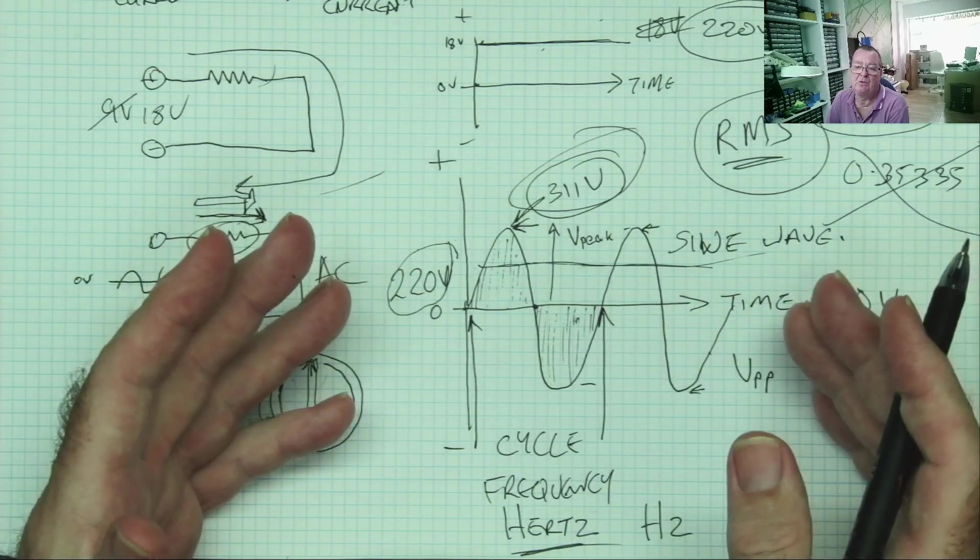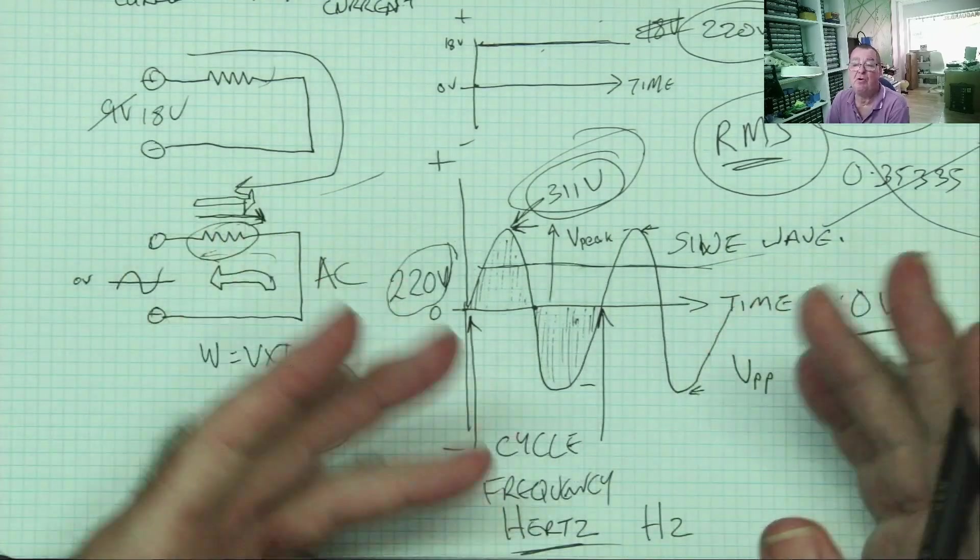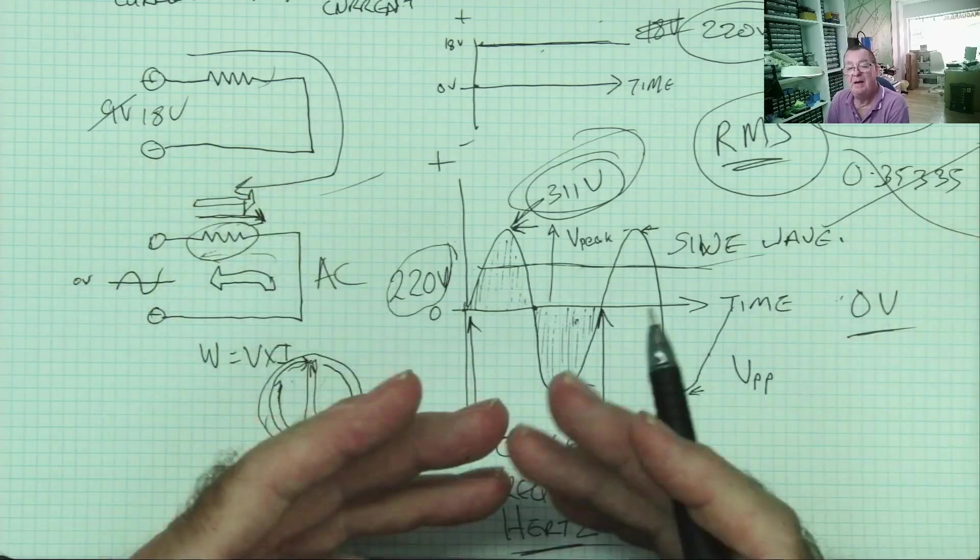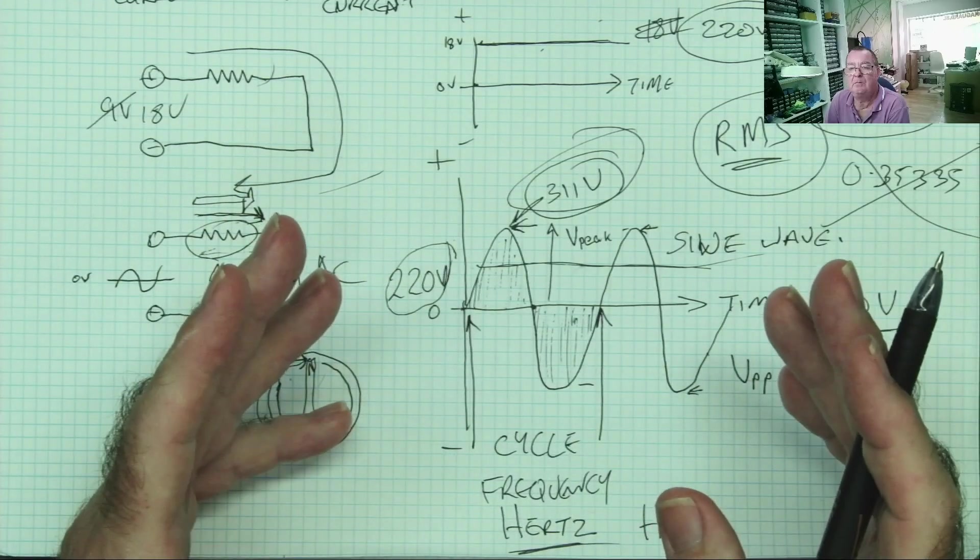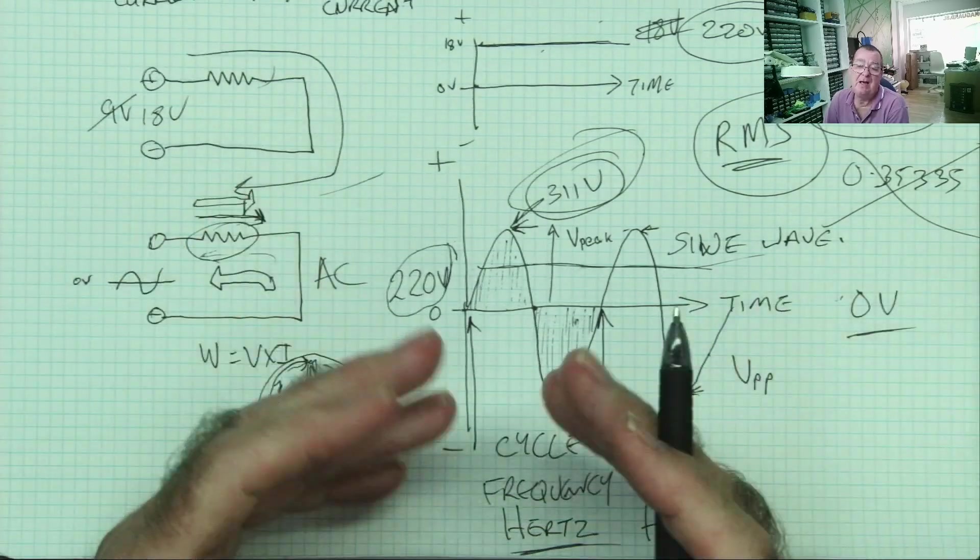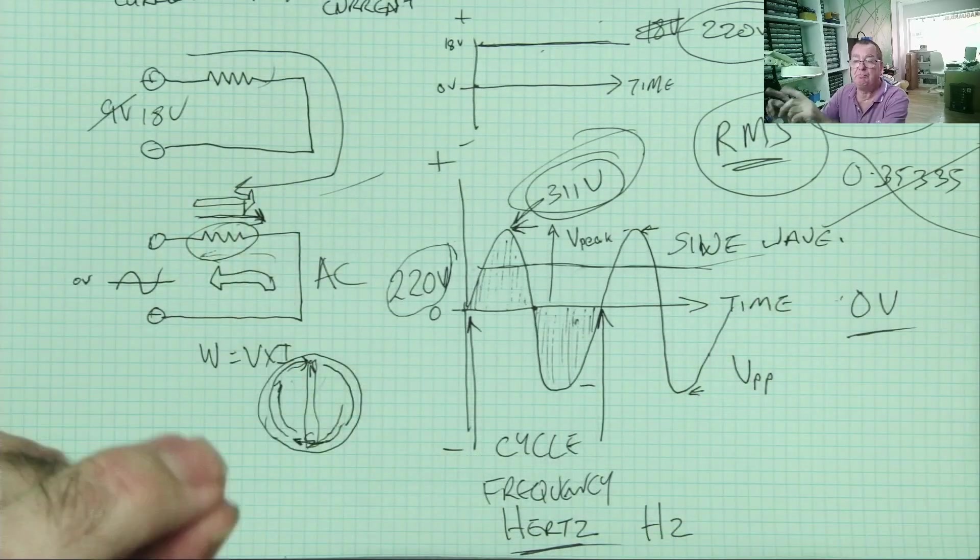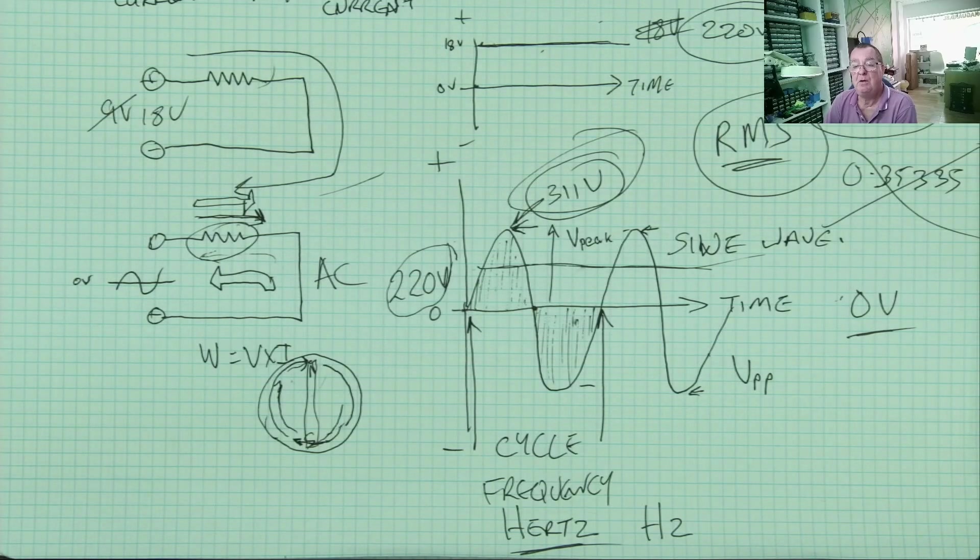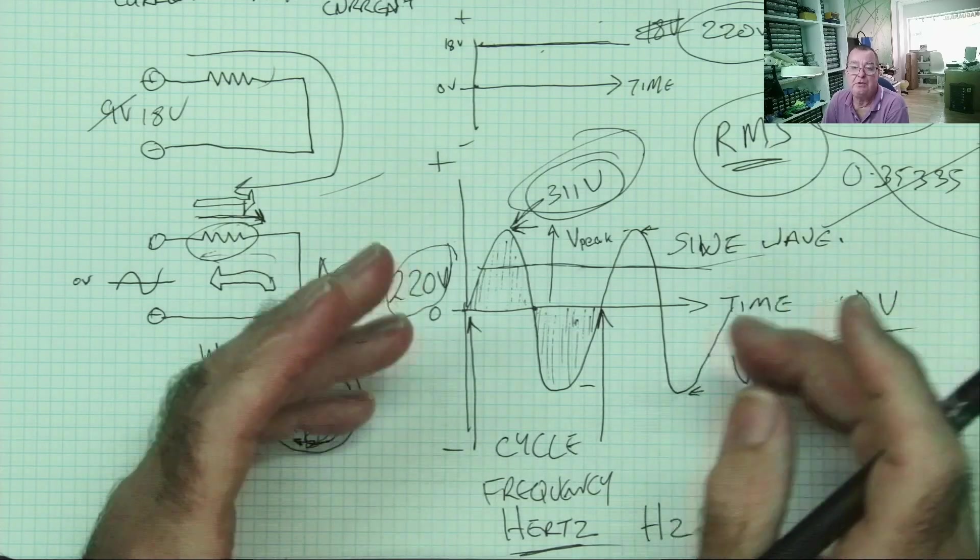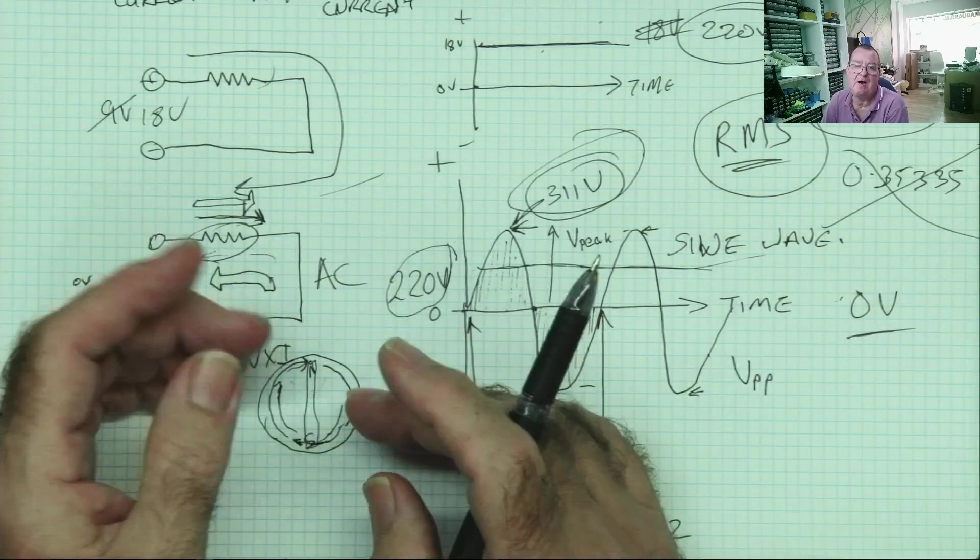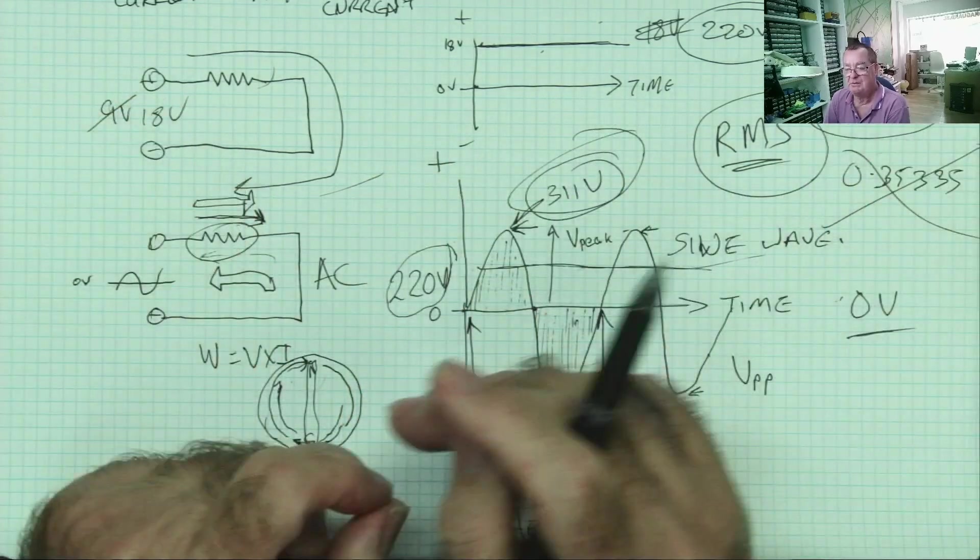So, AC can also carry information, analog information like audio. It can also carry digital information. It can run at very high frequencies. Very high frequency, AC becomes radio waves, Wi-Fi, radio, whatever. So, AC has lots of other uses other than just carrying power. DC just carries power.